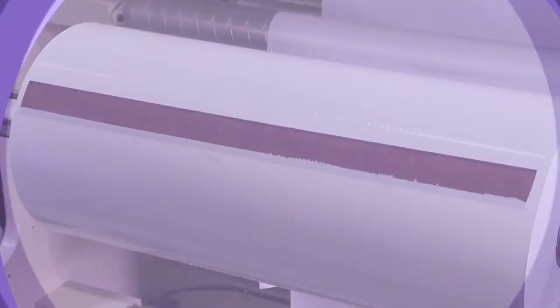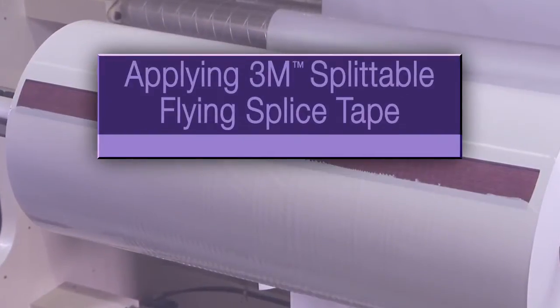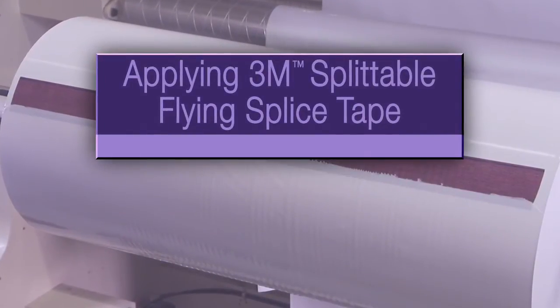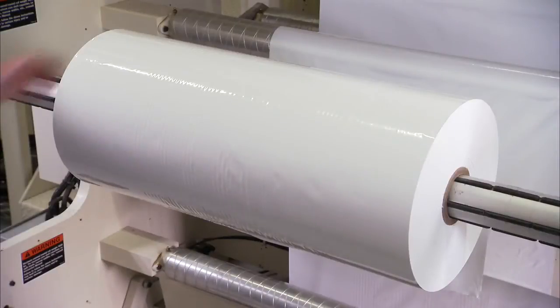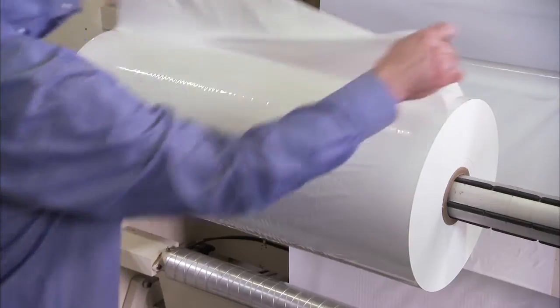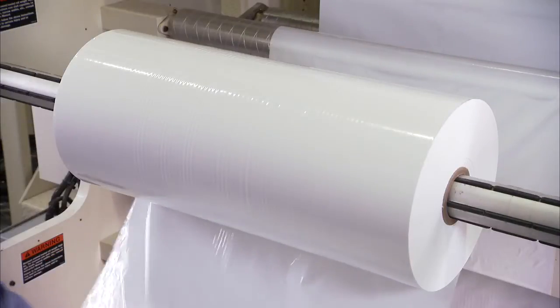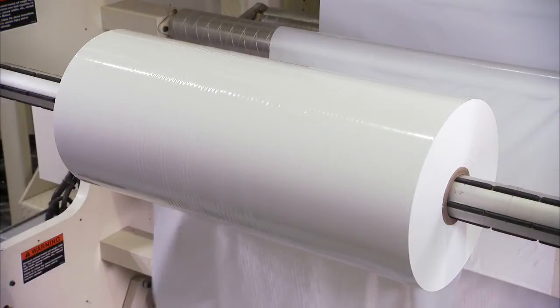This video will instruct you on how to properly apply 3M's splittable flying splice tape in flexographic printing. First, to prepare the substrate, fold back the top layer and temporarily secure if necessary.